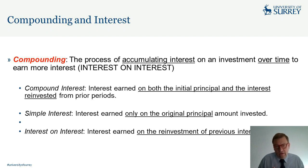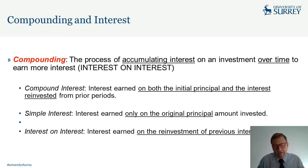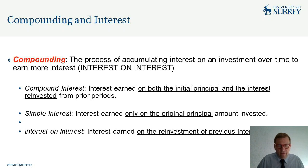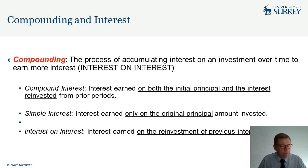Key definitions: Compounding is the process of accumulating interest on an investment over time — commonly called interest on interest. Compound interest is interest earned on both the initial principal and reinvested interest from prior periods. Simple interest is interest earned only on the original principal. Interest on interest is interest earned specifically on the reinvestment of previous interest payments.